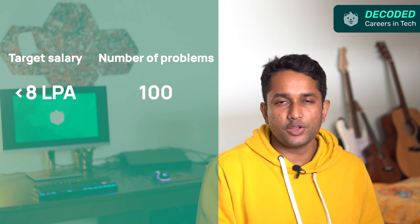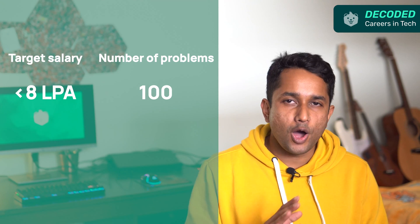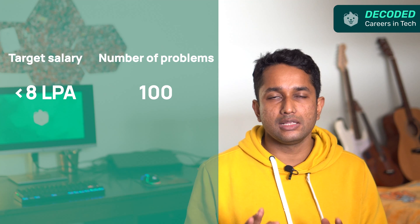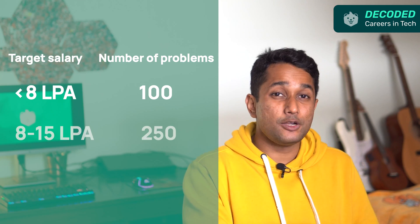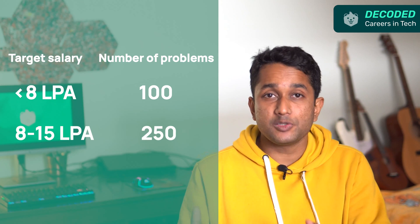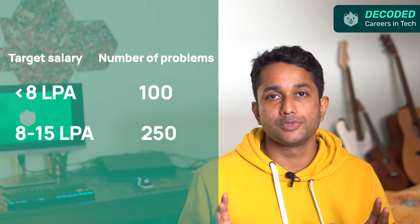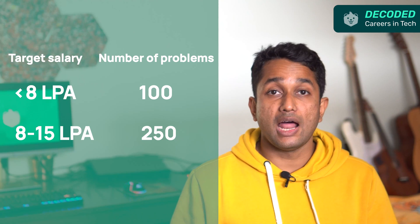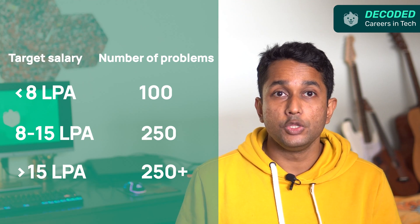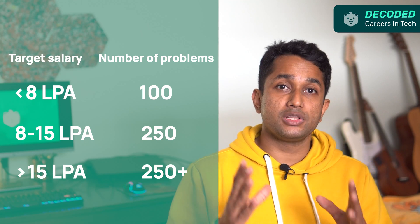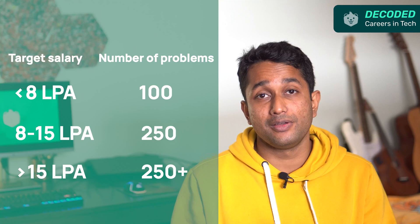If you're a fresher or relatively new to the industry, 100 problems is all it takes to crack a job under 8 lakhs per annum. If you're aiming for 8 to 15 lakhs per annum, you'll need to solve about 250 problems. And if you're looking to land your dream job which pays above 15 lakhs per annum, you need to focus on more than 250 problems to make it through every round.